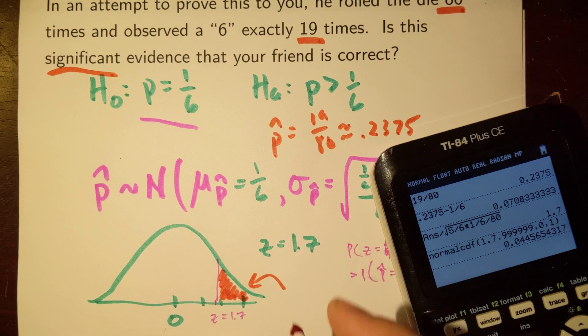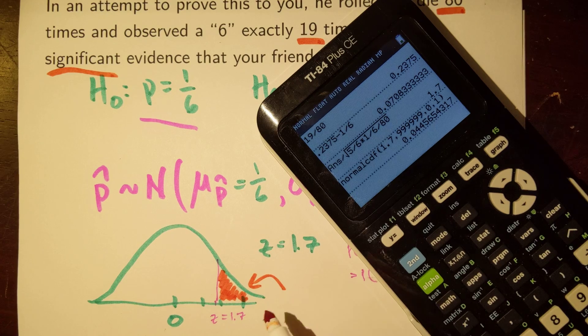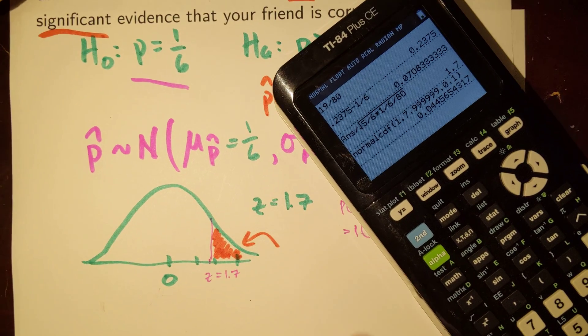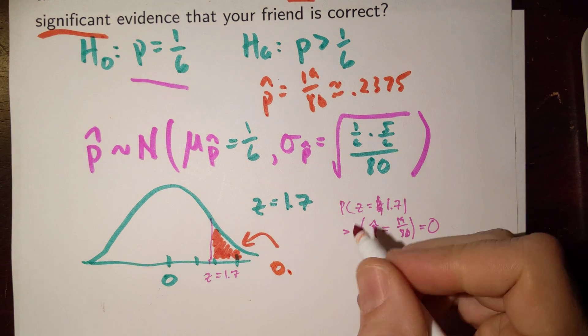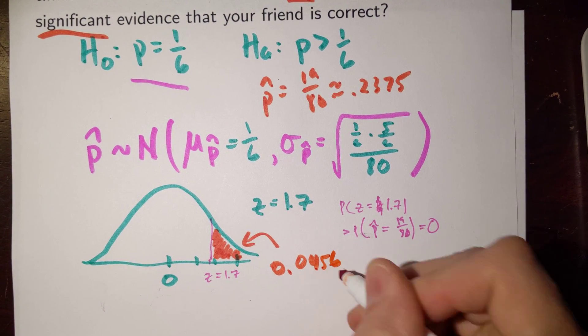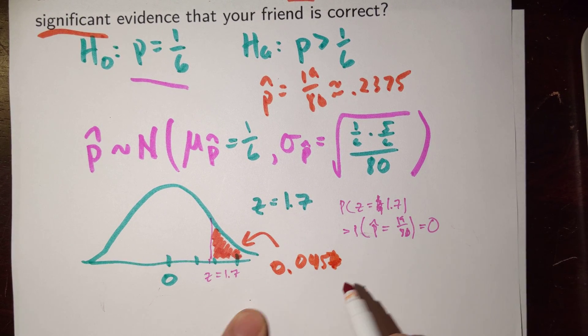And I got that this area is, you can see that. Let me move this up a little bit. This area is 0.0456. Actually, I guess I should round that up to a 7. It doesn't really matter. When you look at that, you say, Is this a large probability?